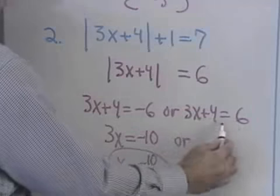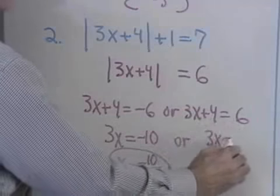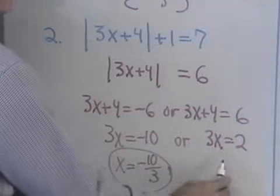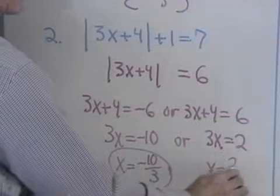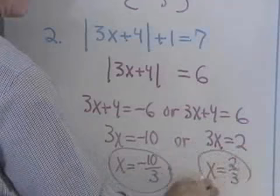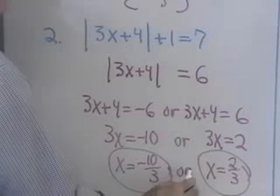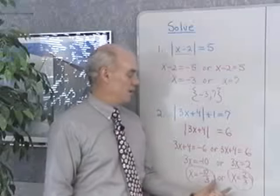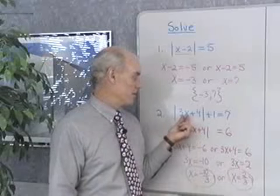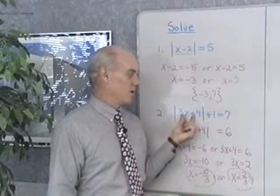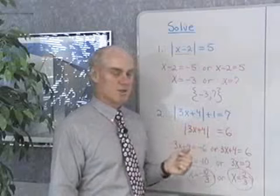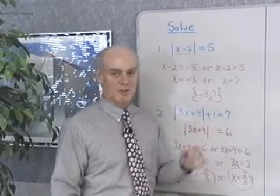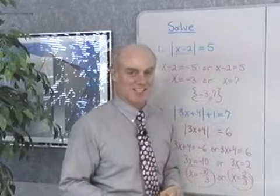Or, add negative 4 to both sides here, and I have 3x is equal to 2. Divide both sides by 3, and I have x is equal to 2 thirds. So I get two solutions: x is equal to negative 10 thirds, or x is equal to 2 thirds. Either one of those two numbers, when I replace x with them in the original equation, will give me a true statement — that is, the absolute value of that quantity plus 1 will always turn out to be 7.